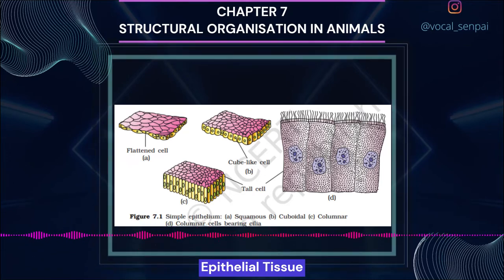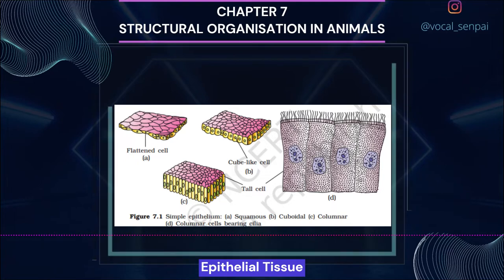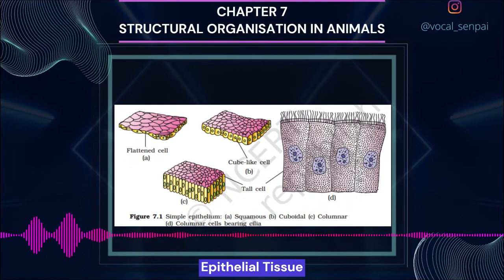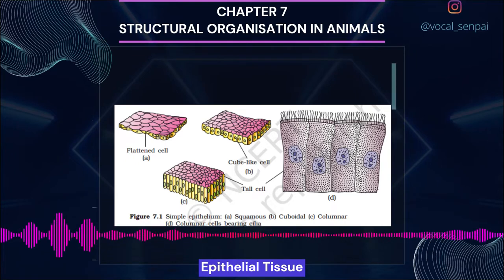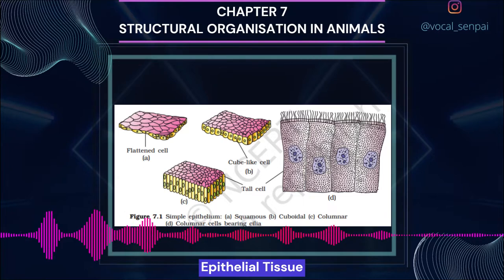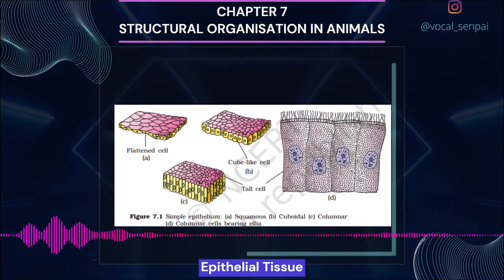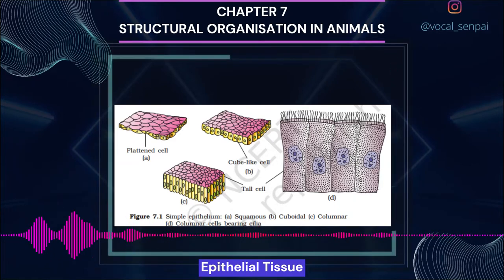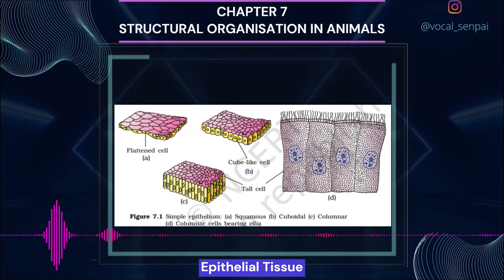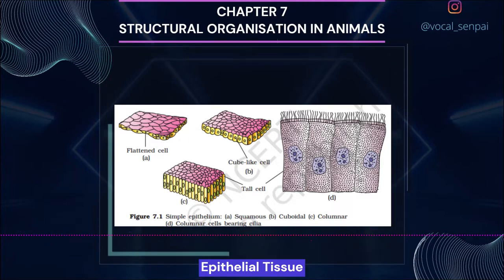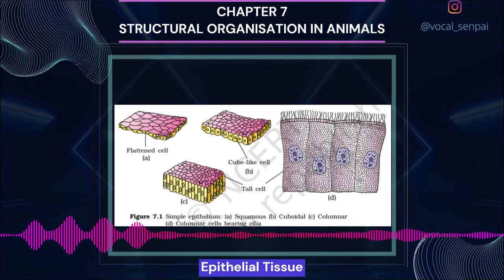The cells of epithelial tissue are compactly packed with little intercellular matrix. There are two types: simple epithelium, composed of a single layer of cells functioning as a lining for body cavities, ducts and tubes; and compound epithelium, consisting of two or more cell layers with a protective function as in the skin. Simple epithelium is further divided into three types: Squamous, Cuboidal and Columnar (figure 7.1).